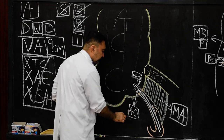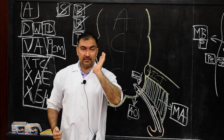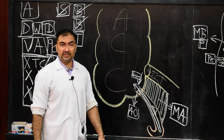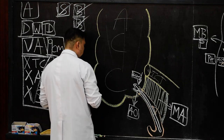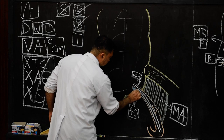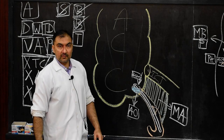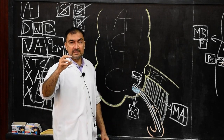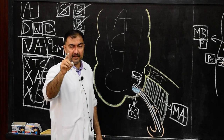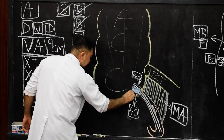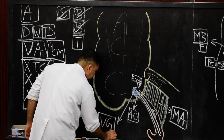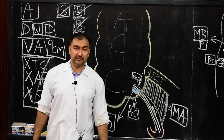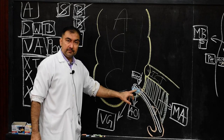Another important point for MCQs: this appendicular orifice is guarded by a small semicircular fold of mucosa — this fold is known as the valve of Gerlach, spelled G-E-R-L-A-C-H. It is a semicircular mucous fold guarding the appendicular orifice, and is often asked in MCQs and one-mark question answers.